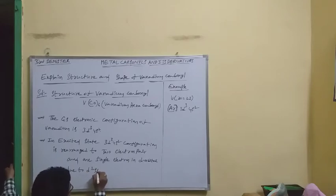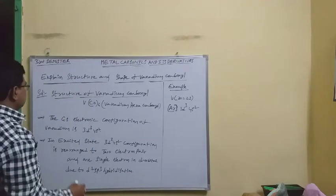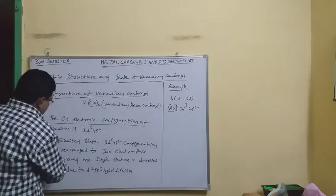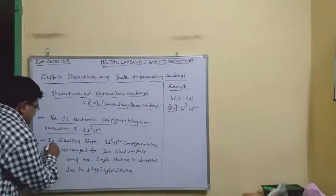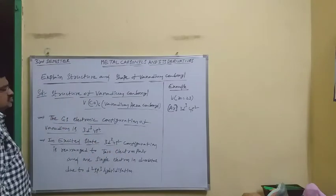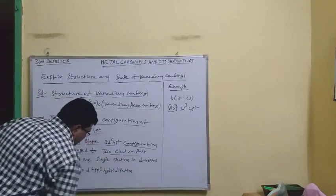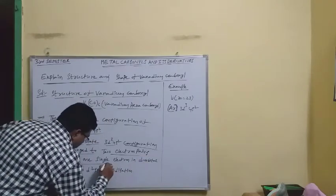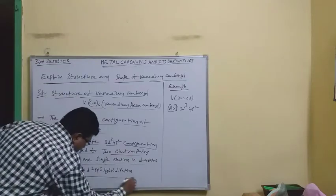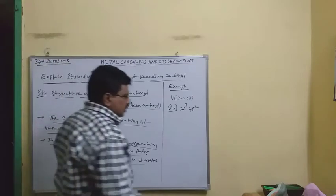Due to sp3 hybridization, the ground state electron configuration of vanadium — 3d3 4s2 — in the excited state is rearranged to two electron pairs and one single electron in the orbital, due to D2sp3 hybridization.